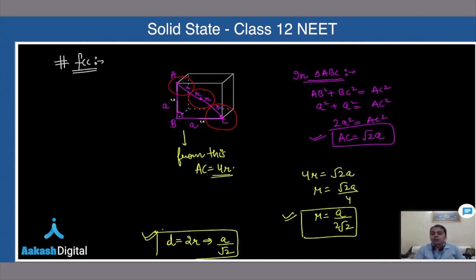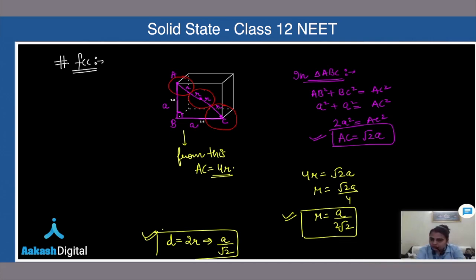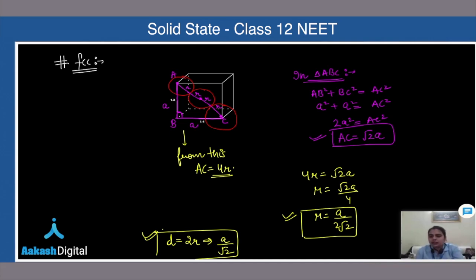So for simple cubic we have d = a = 2r, and for face-centered cubic we have r = a/(2√2) and d = a/√2. d is the interionic distance — the distance between the two centers of the nearest particles — which is always equal to 2r.